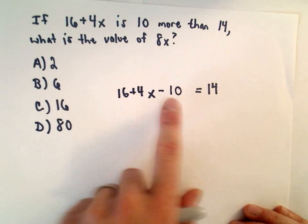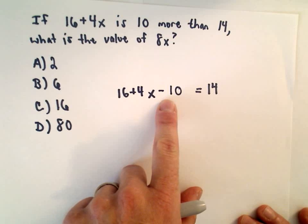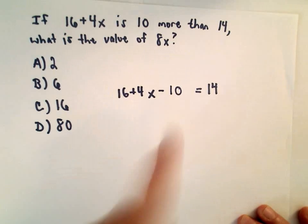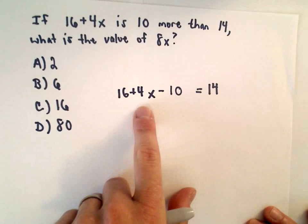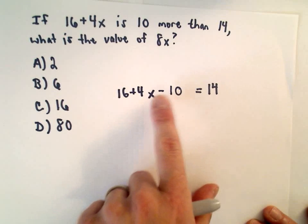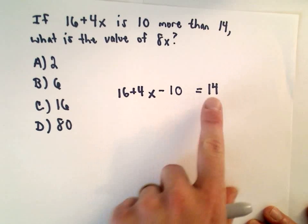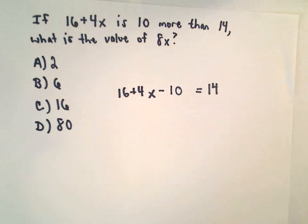So be careful. I think this would be the one place to make a mistake. Maybe you could make this a plus sign and then something weird would happen. But since 16 plus 4x is 10 larger, I would have to subtract 10 away from it to make it equal 14.